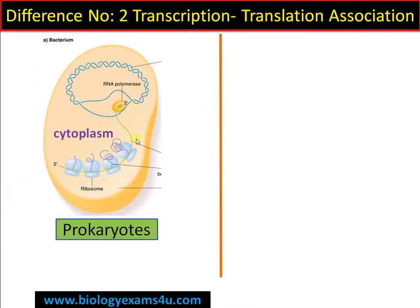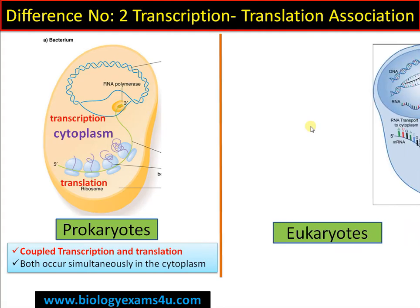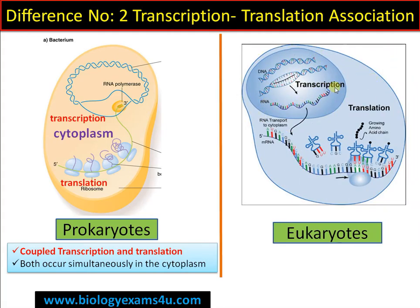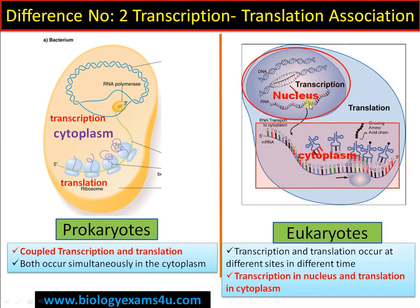Difference number two is regarding the transcription-translation association. In prokaryotes, as you can see in this figure, translation has already started while transcription is still going on — both processes are coupled and occur simultaneously in the cytoplasm. In eukaryotes, transcription occurs in the nucleus, the RNA is further processed, then transported to the cytoplasm for translation — they occur at different sites.